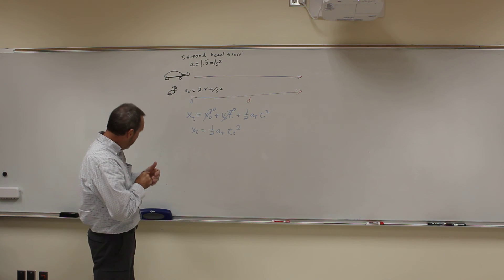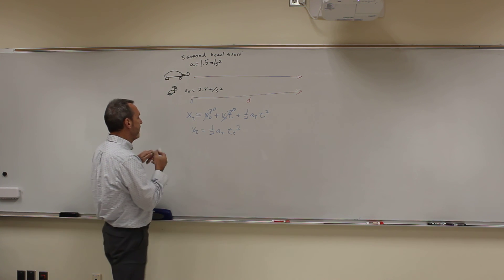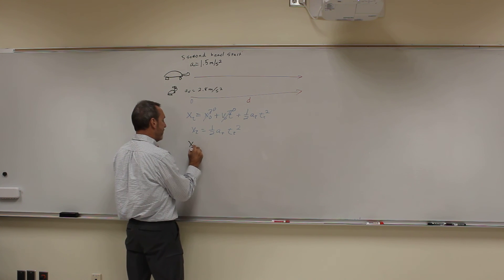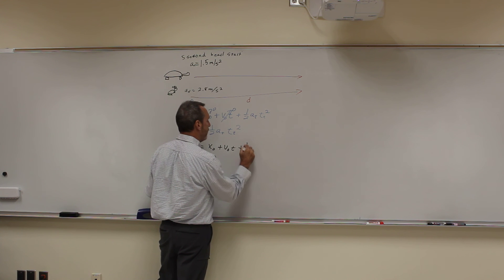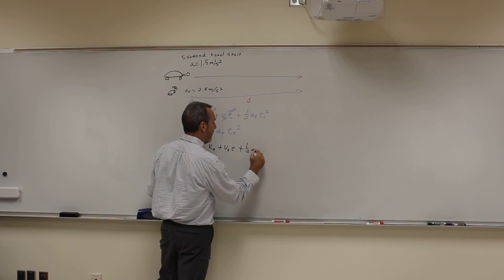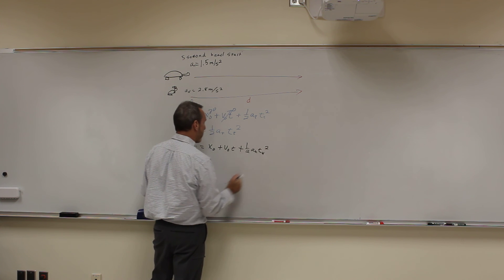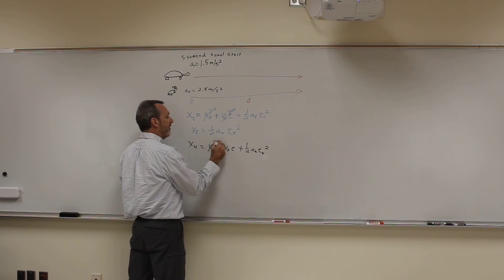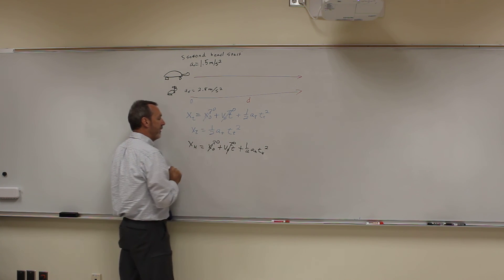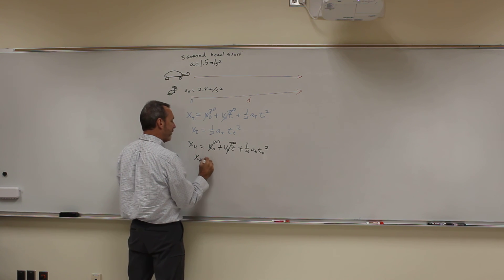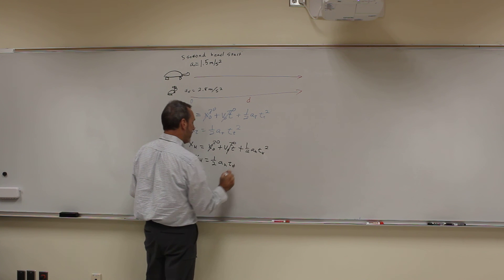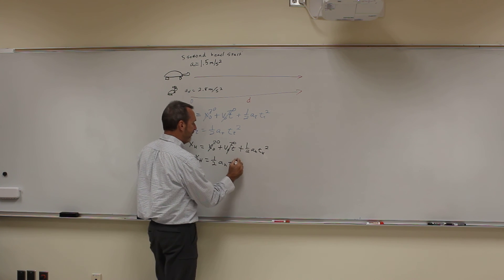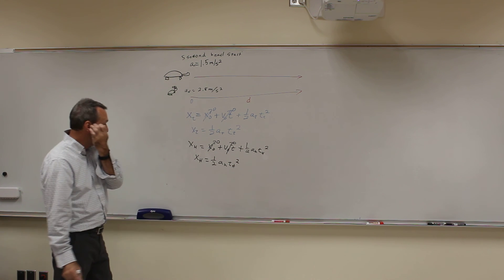Now let's figure out the distance that the hare goes. The distance the hare goes is again x-not plus v-not t plus 1 half the acceleration of the hare times the time the hare goes, squared. Initial position is 0, initial velocity is 0. So the distance the hare goes equals 1 half a-hare times the time of the hare squared.